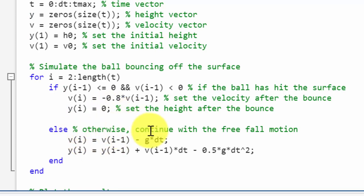Else, otherwise the ball continues the free fall motion. v equals previous velocity minus g times time step, then y equals v*dt minus half g*dt squared. With this I am adding the previous height because from the previous iteration we are going to add the height of the next iteration.